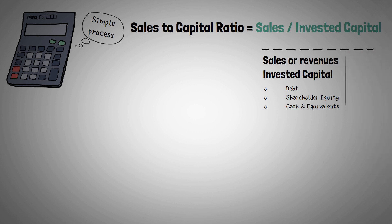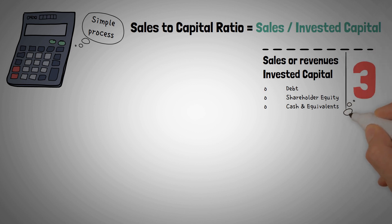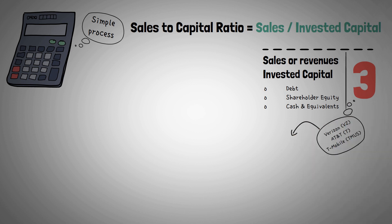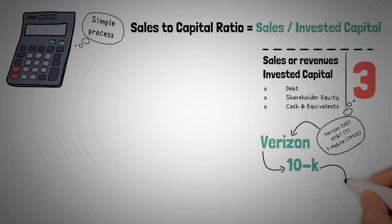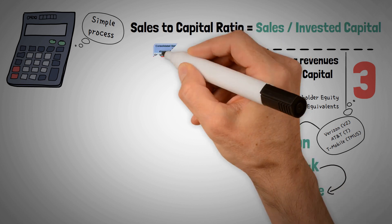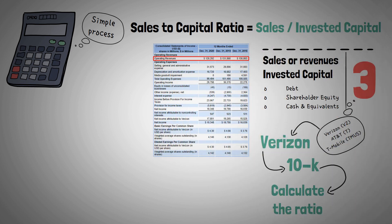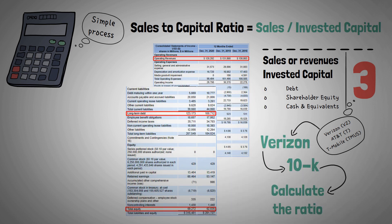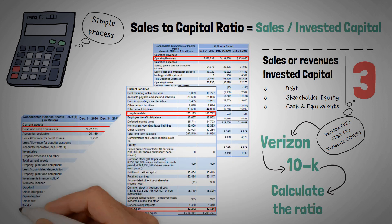Let's take a look at the sales-to-capital ratios of the big three of the telecom sector: Verizon, AT&T, and T-Mobile. First up, Verizon. I will pull up the 10K and locate each of the items to calculate the ratio, pulling highlighted numbers from both the income statement and balance sheet. Revenues: $128,292. Long-term debt: $123,173. Shareholders' equity: $69,272. Cash and equivalents: $22,171.